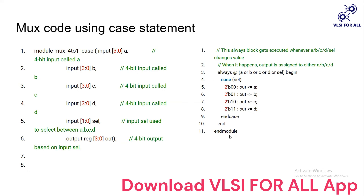The same module structure is used — it should end with endmodule. A, B, C, D are inputs, select is the input, and there is a single output line. Here we use the always block. Any change in any of the inputs A, B, C, D, or select triggers the block. We check the select line: if select is 0-0, A is assigned to the output; if 0-1, B is assigned; if 1-0, C is assigned; if 1-1, D is assigned. This is the endcase, and we use begin and end within the always block.